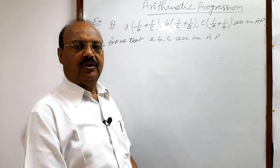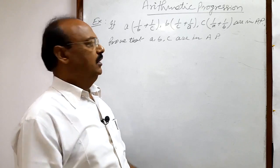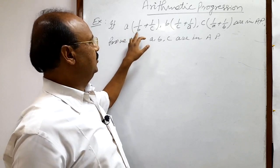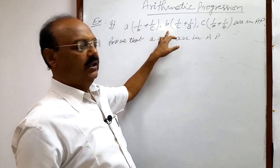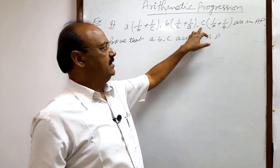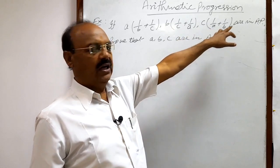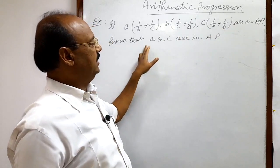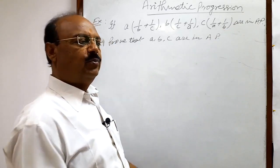Let us discuss a question from the topic arithmetic progression. The question is: if a(1/b + 1/c), b(1/c + 1/a), and c(1/a + 1/b) are in AP, then prove that a, b, c are in AP.